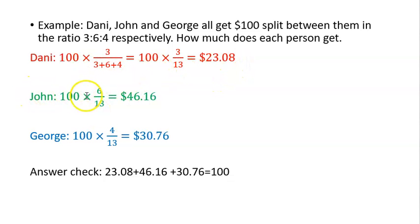Now John. We still have $100 to split. John is the second number, so we take 6 and put it at the top. The important thing to remember is that once you've totaled all these numbers, that total never changes. So it's 6/13, which gives us $46.16.